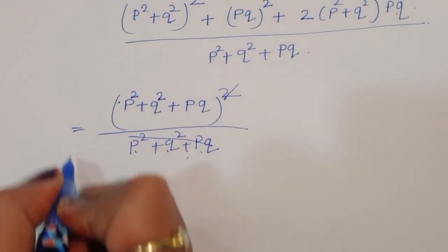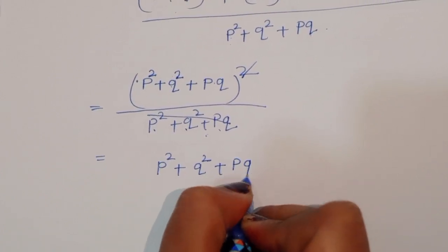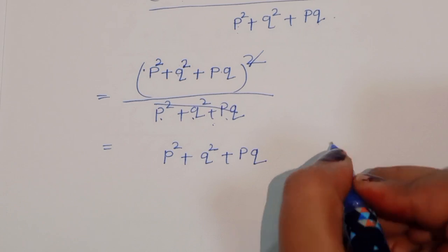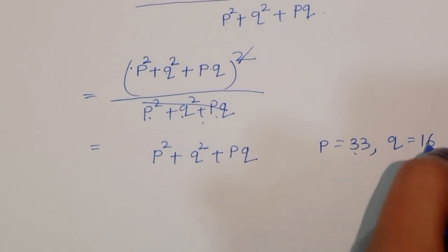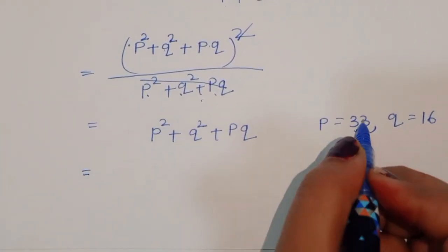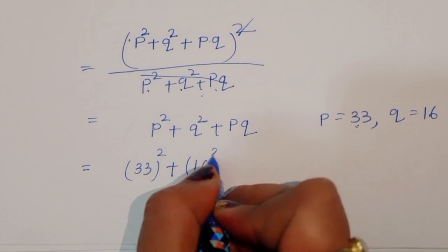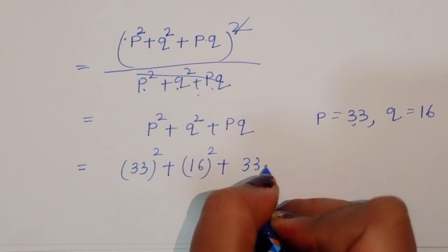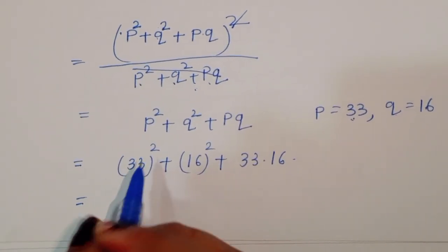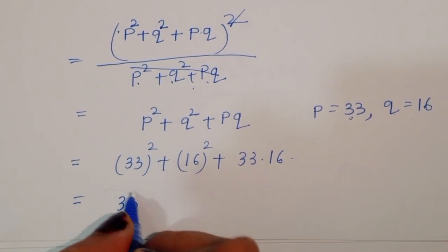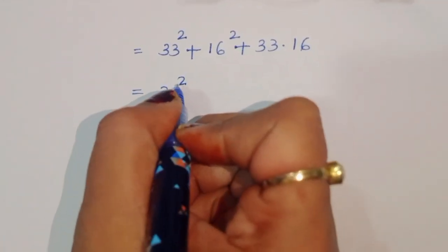After cancellation, we get P² plus Q² plus PQ. We already assumed P equals 33 and Q equals 16. Substituting: 33² plus 16² plus 33 times 16.